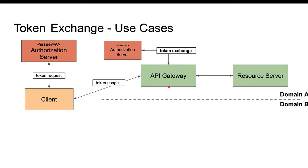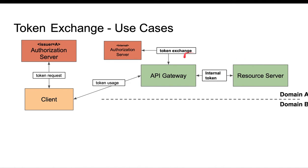The authorization server validates the access token, looks up the associated user, and creates a new token with more details about this user. It returns the token to the API gateway, which then forwards it to the resource server. The resource server can now implement authorizations based on user role, user age — for example, must be older than 21 — or internal groups the user belongs to. All kinds of information that shouldn't be available outside of this internal area.